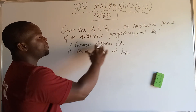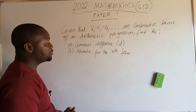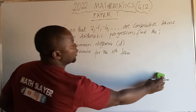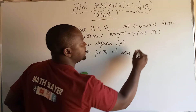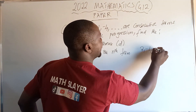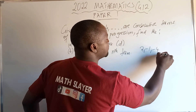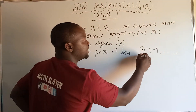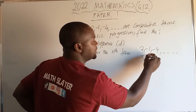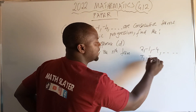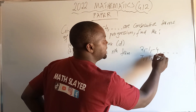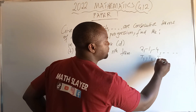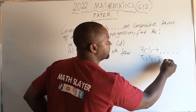Very simple. How can you find the common difference? Remember, we have got this sequence: 2, negative one, negative four. So 2 is the first term, negative one is the second term, and negative four is the third term.